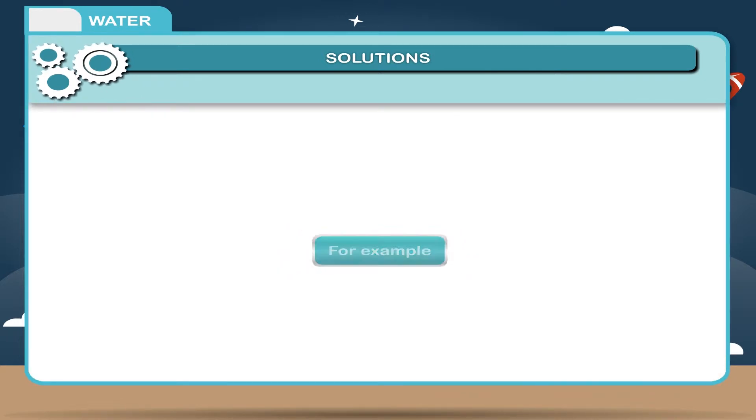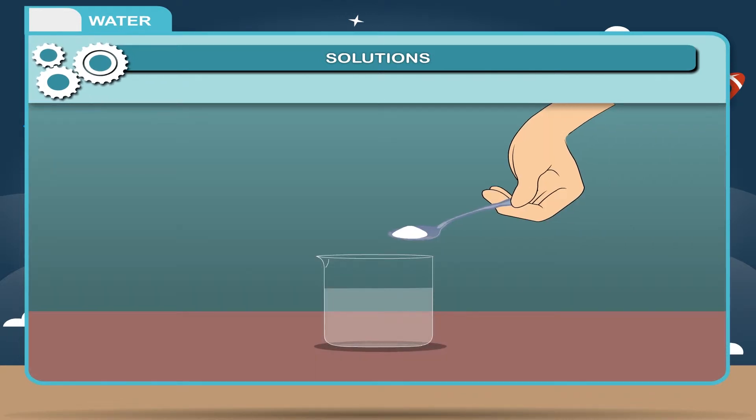For example, take a spoon of sugar and add it to a glass of water. The mixture of sugar and water is known as a solution.